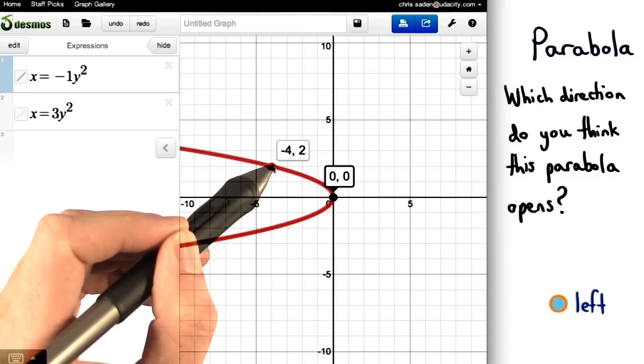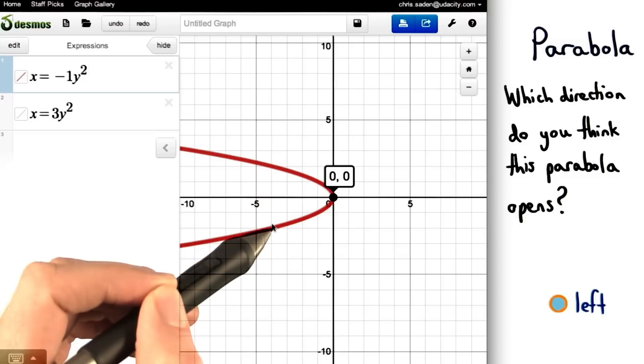For example, we know the point negative 4 comma 2 is on the graph, so we could also know that the point negative 4, negative 2 is also on the graph.